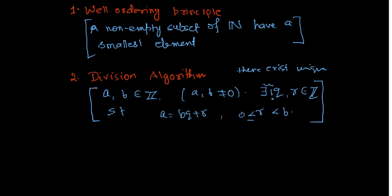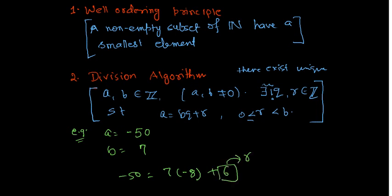So this is the division algorithm. Let's see one example of this. So suppose that your a is let's say minus fifty and b is let's say seven. So I write minus fifty equals seven into minus seven minus one, but I can't write this because this r is negative which is not permissible here.